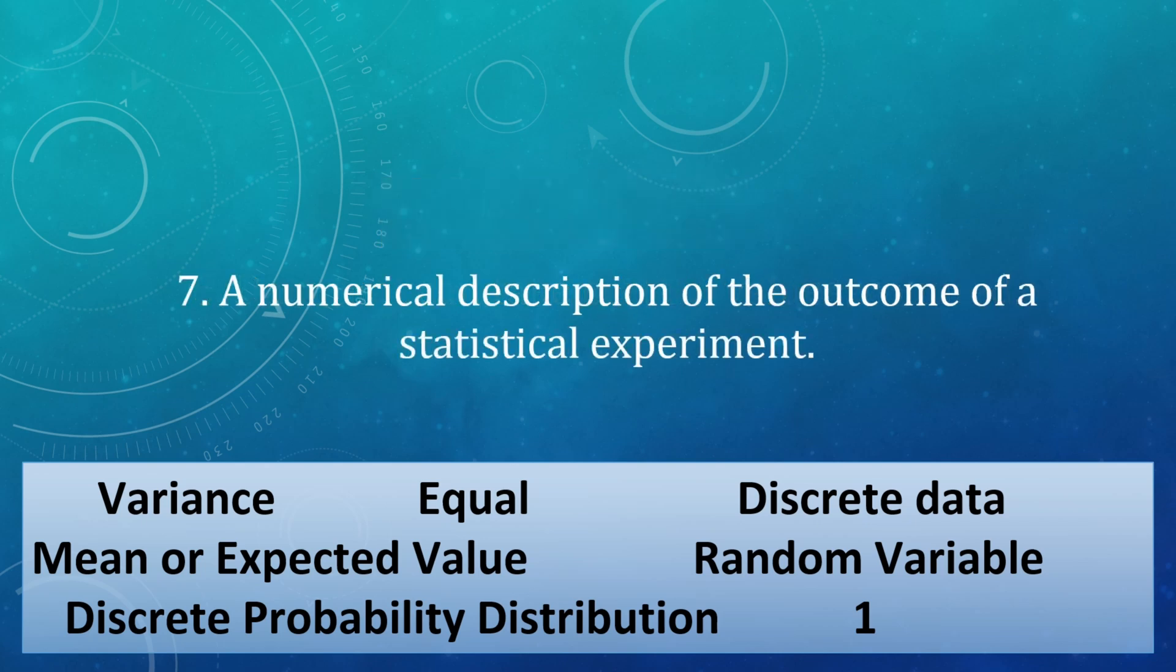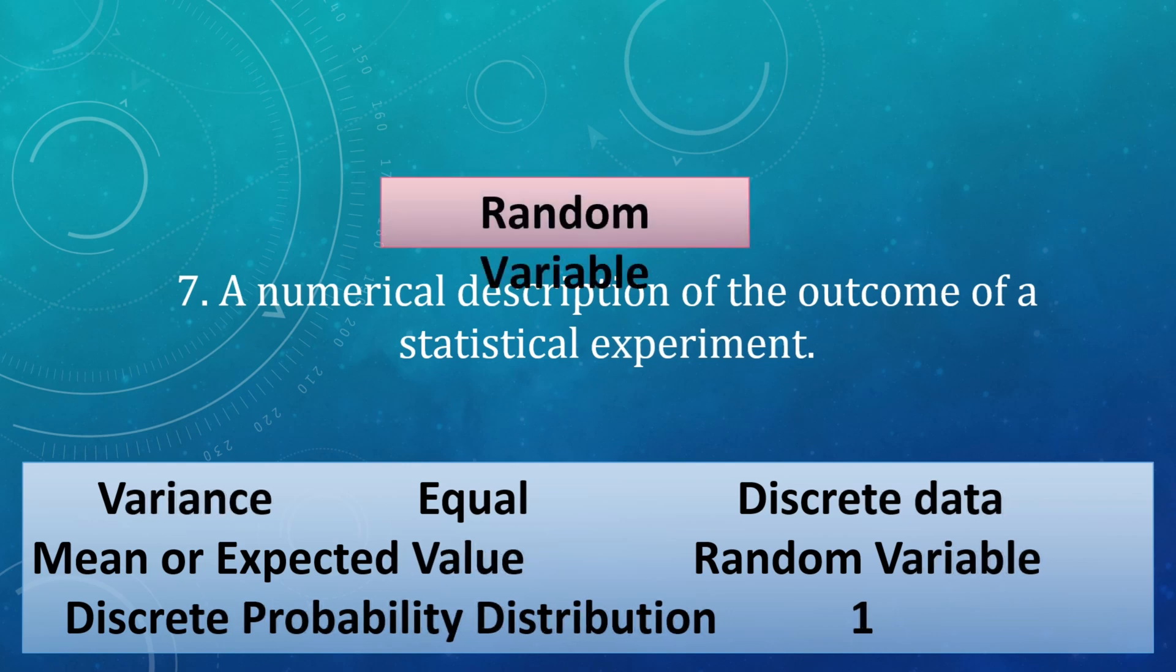Next, a numerical description of the outcome of a statistical experiment. What is your answer? Random variable.